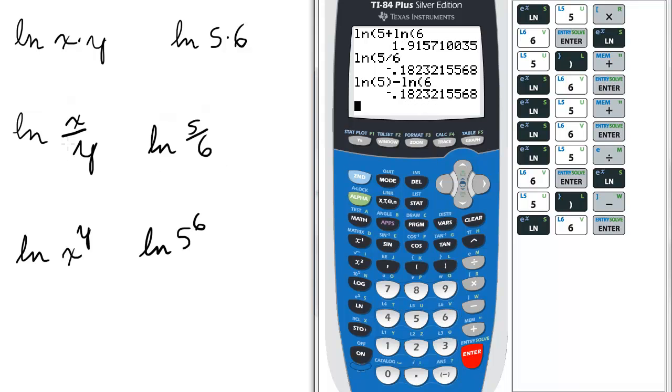Enter. Cool. So the ln of x over y is the ln of x minus the ln of y. Again, use parentheses. Cannot emphasize that too much.